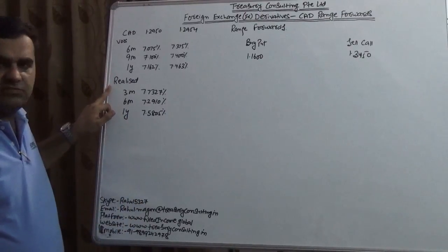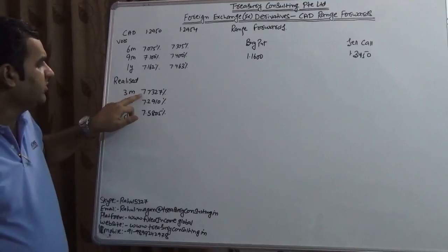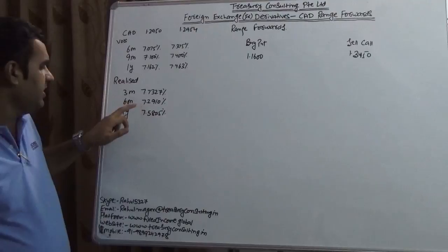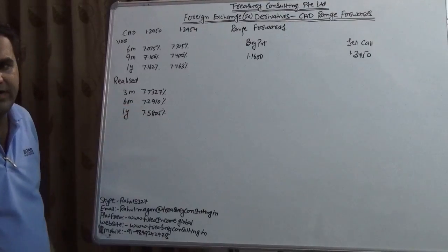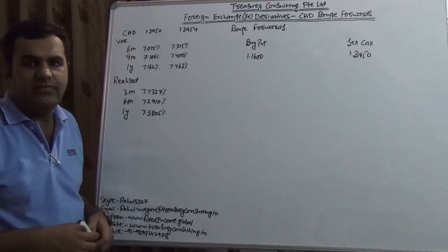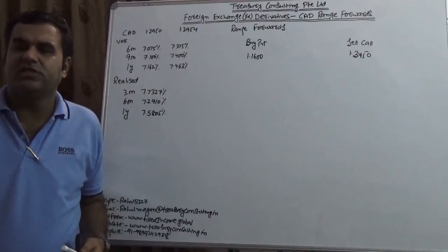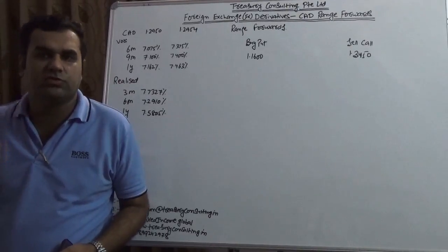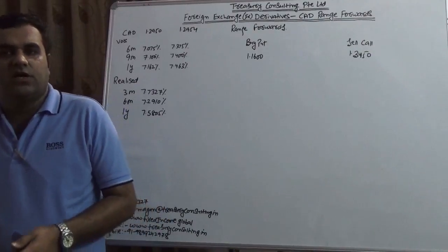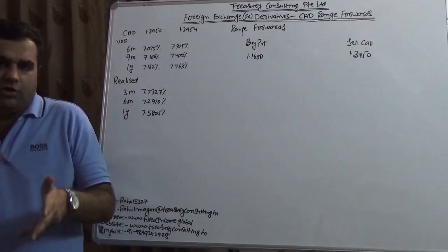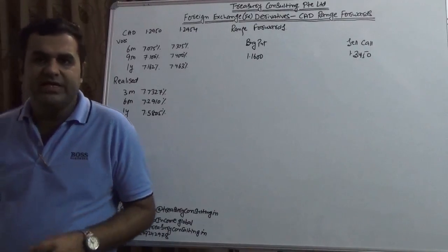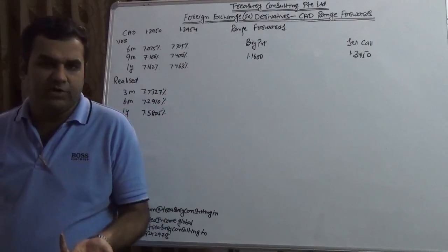We have taken the realized vols also, which is three months 7.73, six months is 7.29 which is 7.3, one year is 7.58. We should not forget that at any point of time there are four kinds of vols. Now the market has introduced fourth vol also which is the options vol. But practically speaking we have three vols which is historical volatility, realized volatility, and implied volatility.